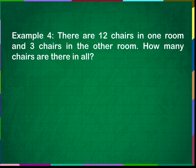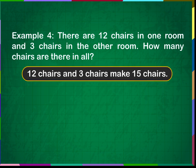Example 4: There are twelve chairs in one room and three chairs in another room. How many chairs are there in all? Twelve chairs and three chairs make fifteen chairs. Twelve plus three is equal to fifteen. There are fifteen chairs in all.